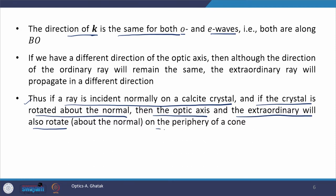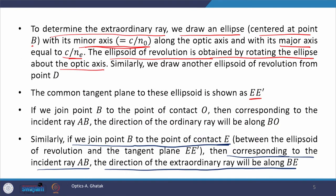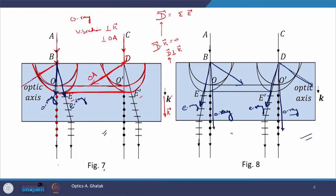It means that the direction of the E ray depends upon the orientation of the optic axis. Thus, if a ray is incident normally on a calcite crystal and the crystal is rotated about the normal, then the optic axis and the extraordinary ray will also rotate about the normal, and this rotation would be on the periphery of a cone. At the output we have two rays: one for the ordinary ray and one for the extraordinary ray. In the ordinary ray we see polarization perpendicular to the plane of the paper, while in the E ray the polarization is in the plane of the paper.